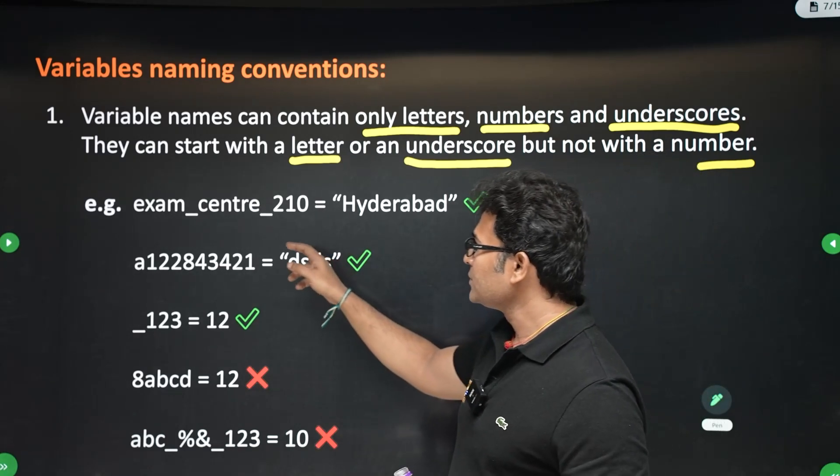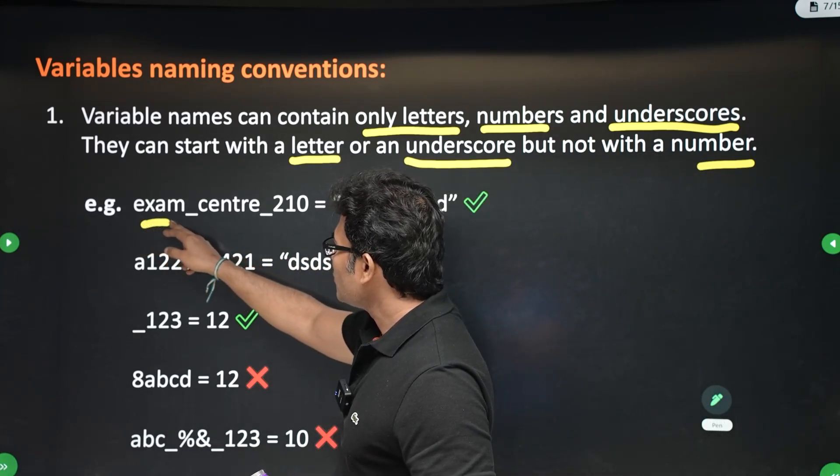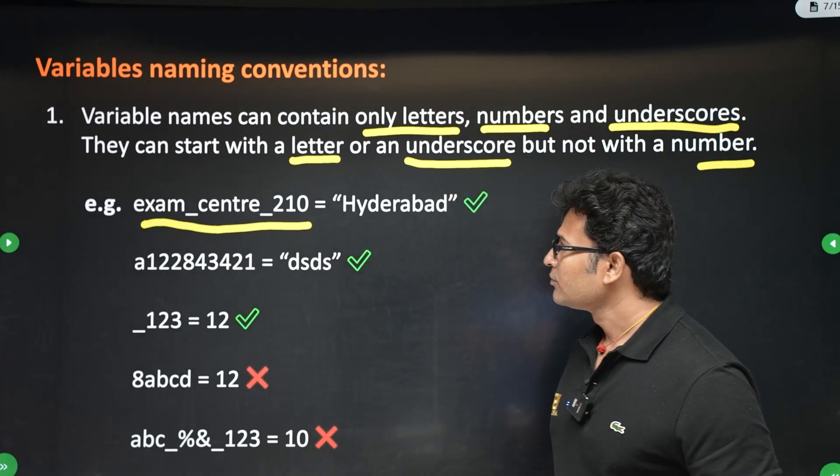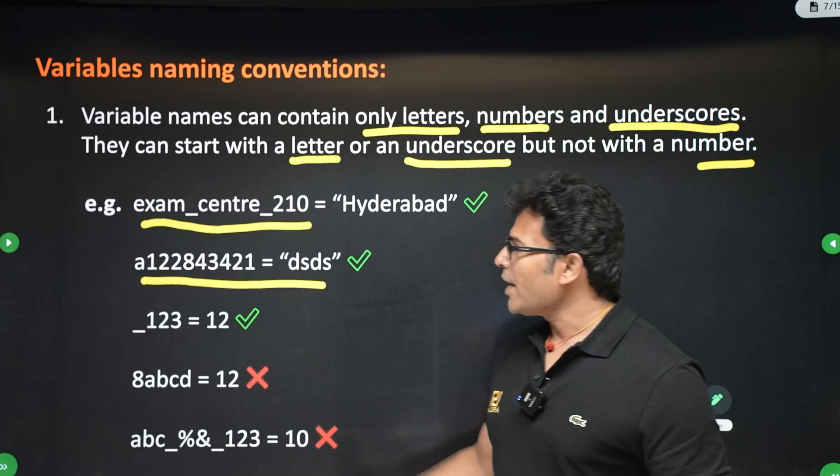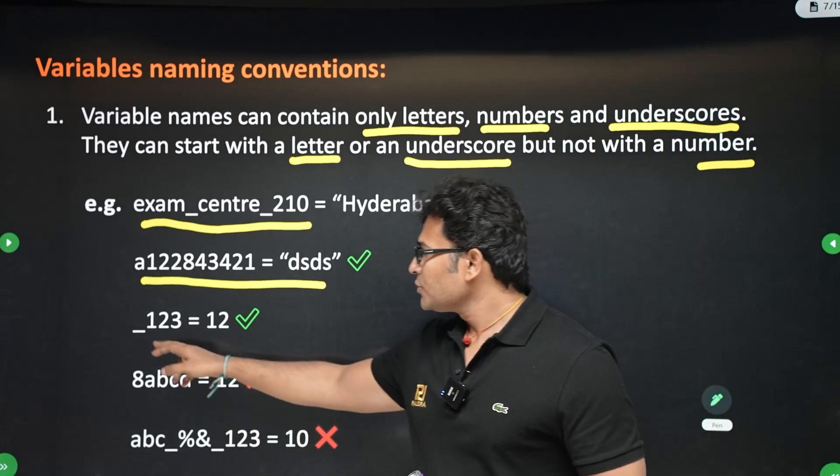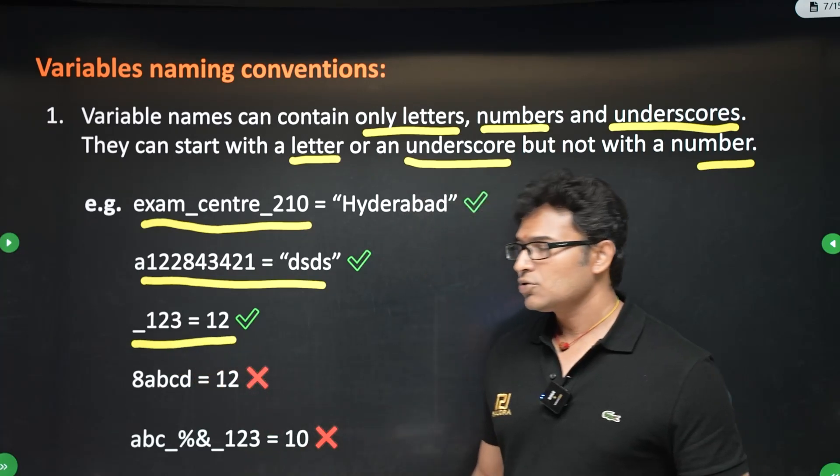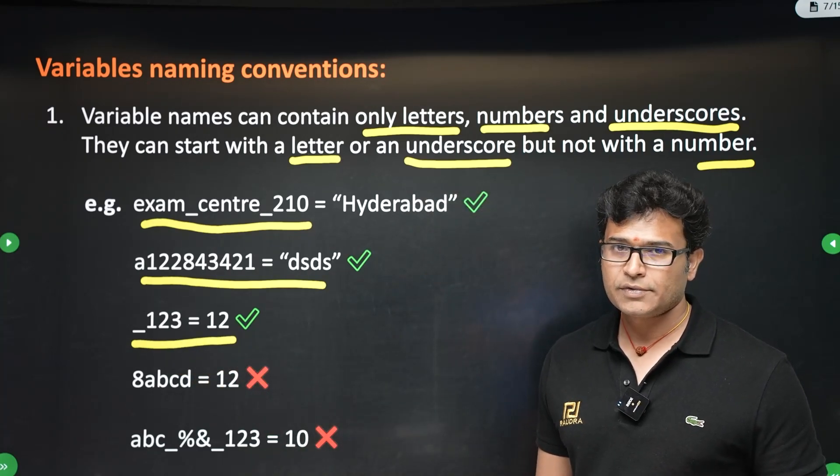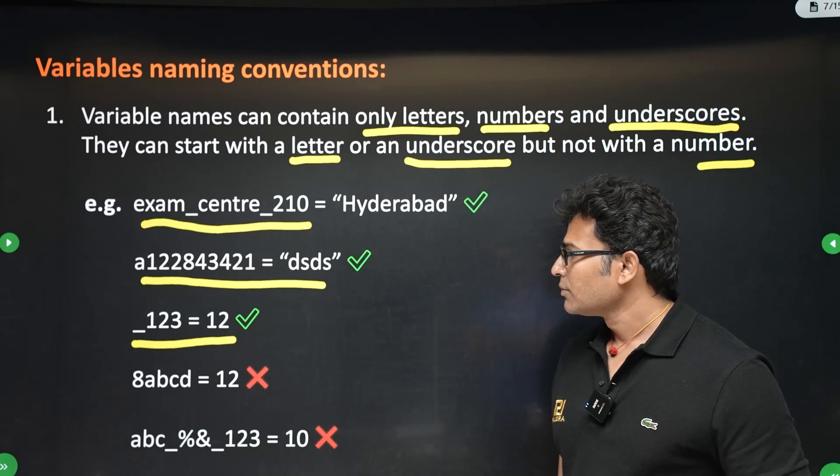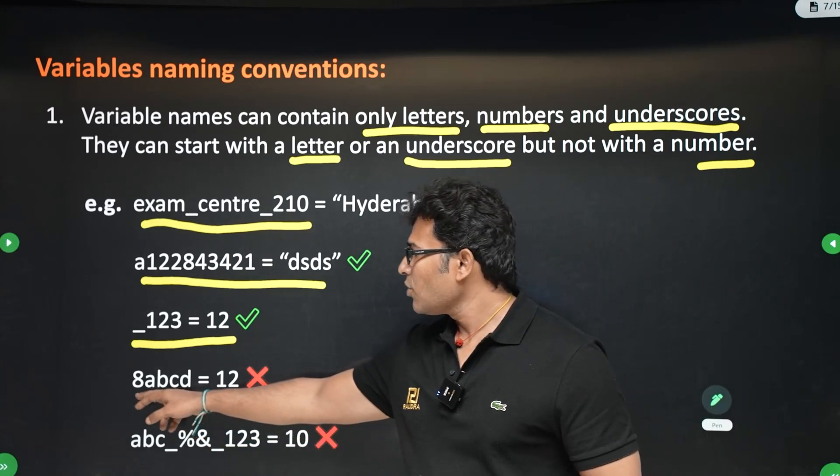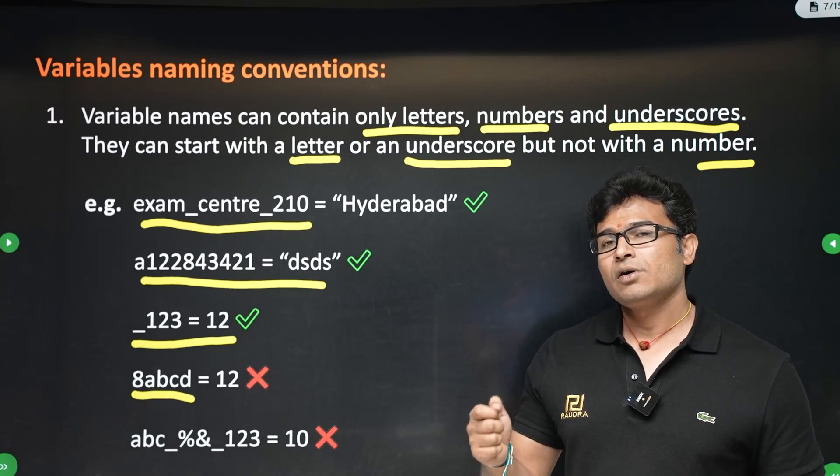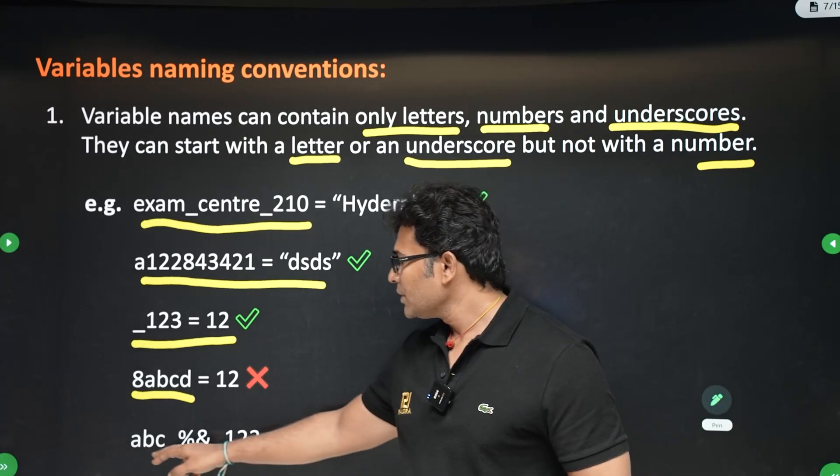For example, if you see this: exam_center_210, this is a valid variable name. A122 something, this is also a valid variable name. Underscore followed by numbers is also valid variable name. You might think that this is not valid, but this is valid. Now, eight followed by something is not valid because you cannot start with a number.